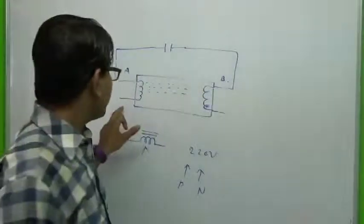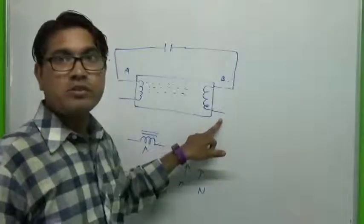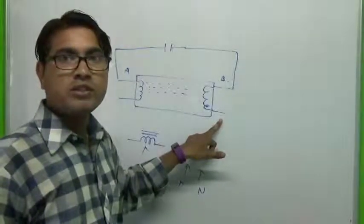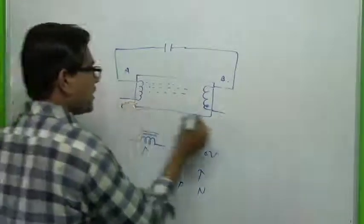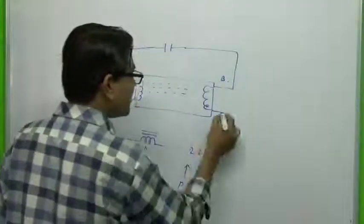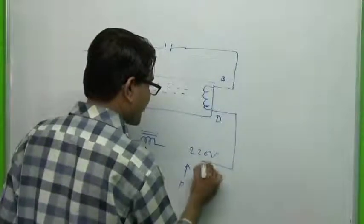Two terminals of the fluorescent tube are left, C and D. The D terminal is connected to the neutral directly.